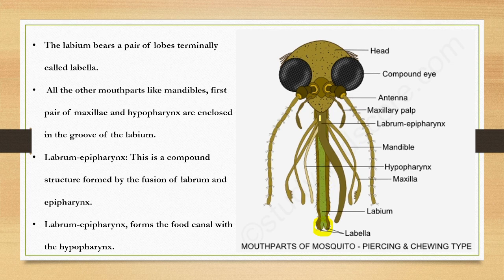The mandible is elongated. The first pair of maxillae — this is the maxilla — and the hypopharynx. The labrum and epipharynx together form a common structure from the fusion of labrum and epipharynx.